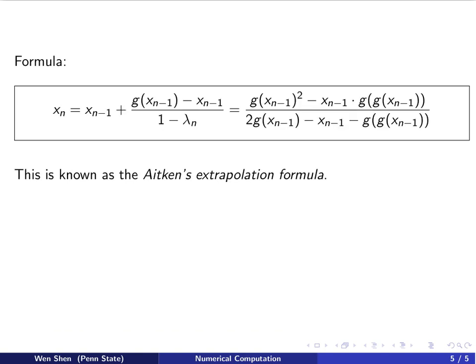And then putting this back in, we get the following formula. Xn will be Xn plus Xn plus Xn minus 1. Down here is 1 minus lambda n. For the lambda n, we got an expression on the previous page. If you plug that in and with some manipulation you would arrive at this expression.